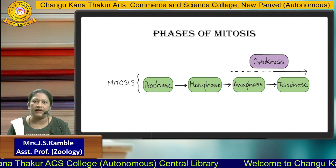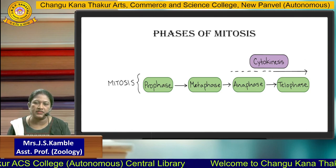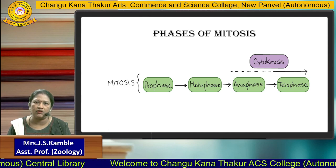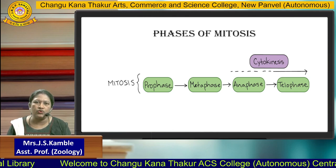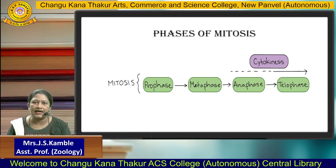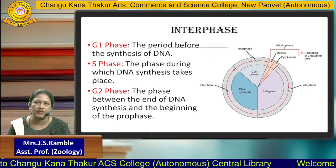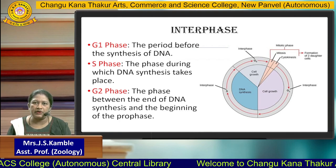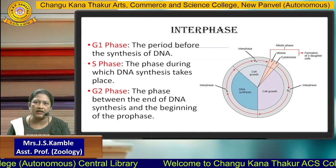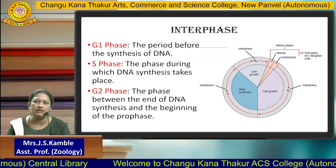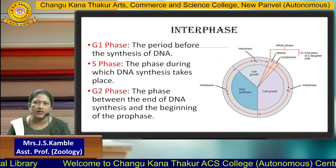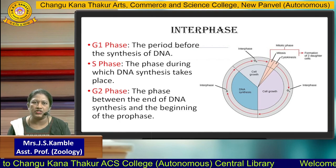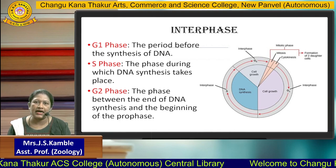Mitosis is divided into some phases. There are a total of four phases: Prophase, Metaphase, Anaphase, and Telophase. But before entering into all these mitotic phases, the cell has to pass through the interphase. Interphase is a type of resting phase and also a preparatory phase, where the cell prepares itself for the next mitotic division. Interphase consists of three sub-phases: G1 phase, S phase, and G2 phase.